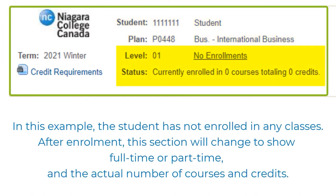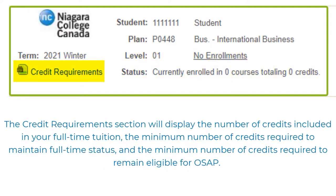After enrollment, this section will change to show either full-time or part-time and the actual number of courses and credits that you are enrolled in. Please make note of the credit requirements for your program. Here is where you can select the credit requirements link to view the number of credits included in your full-time tuition, the minimum number of credits required to maintain a full-time status, and the minimum number of credits required to remain eligible for OSAP. These credit values are specific to your program plan and level.